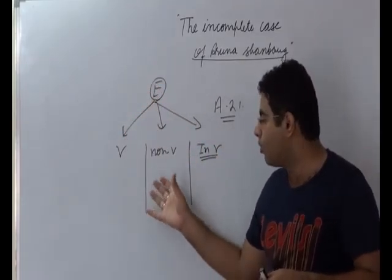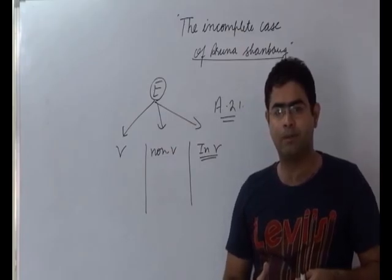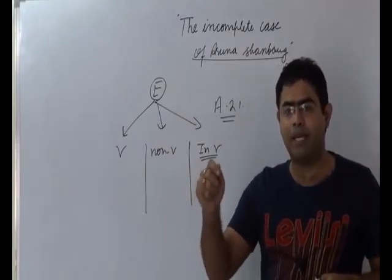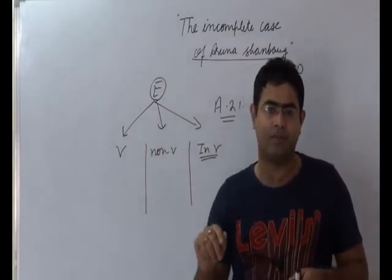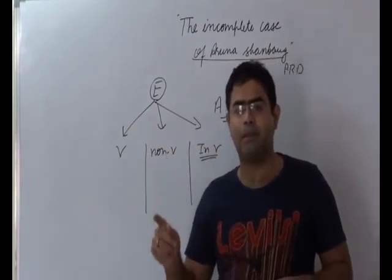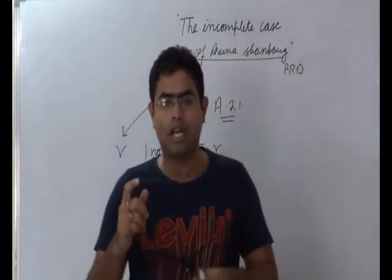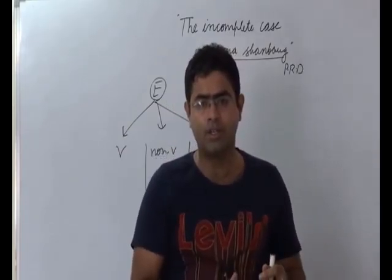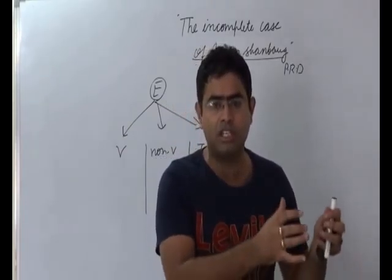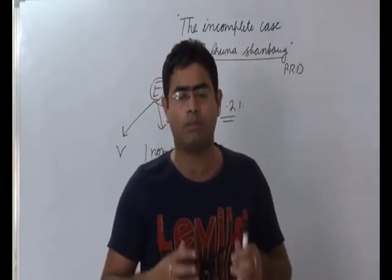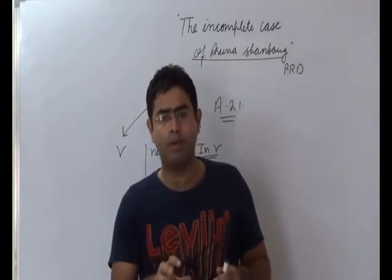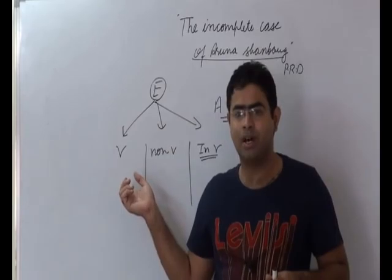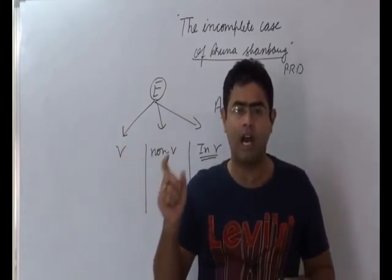What is active? Euthanasia itself means ending of the life. When we deliberately administer such a kind of drug which may lead to the malfunctioning or dysfunctioning of the vital organs of the body, that will be known as active non-voluntary euthanasia.